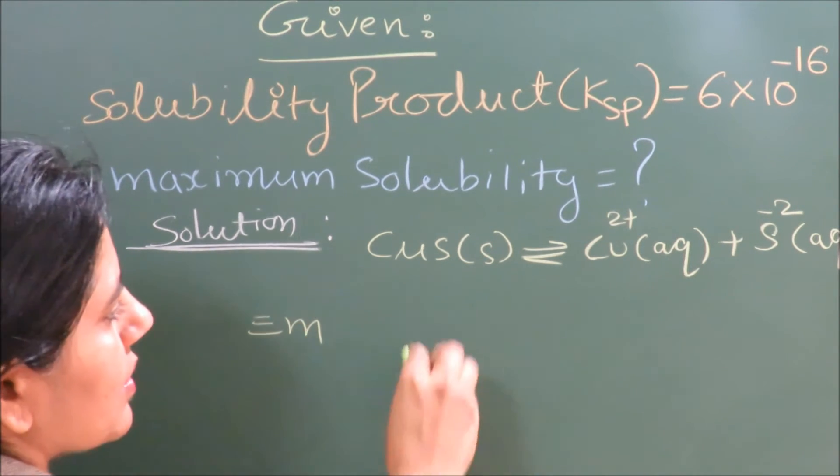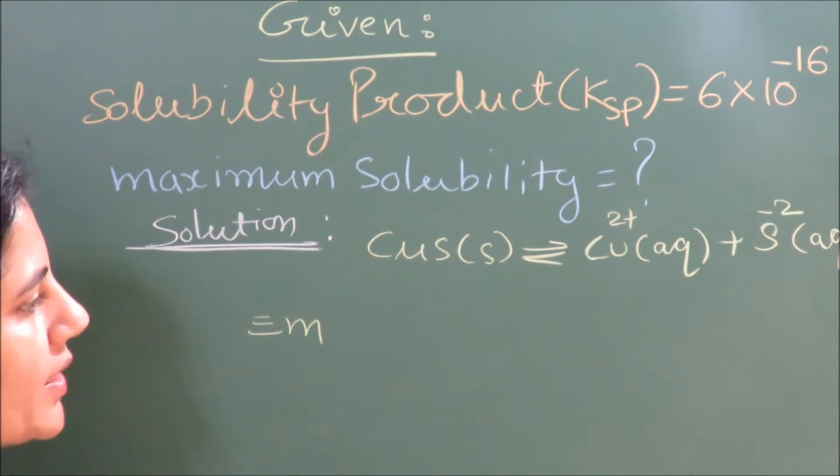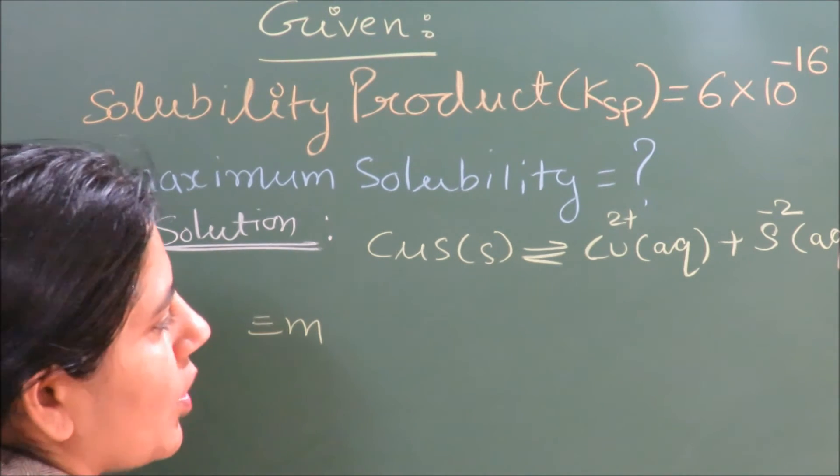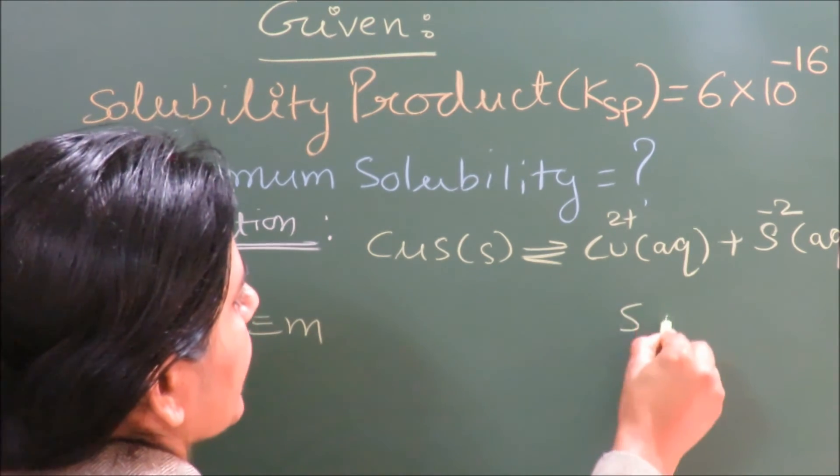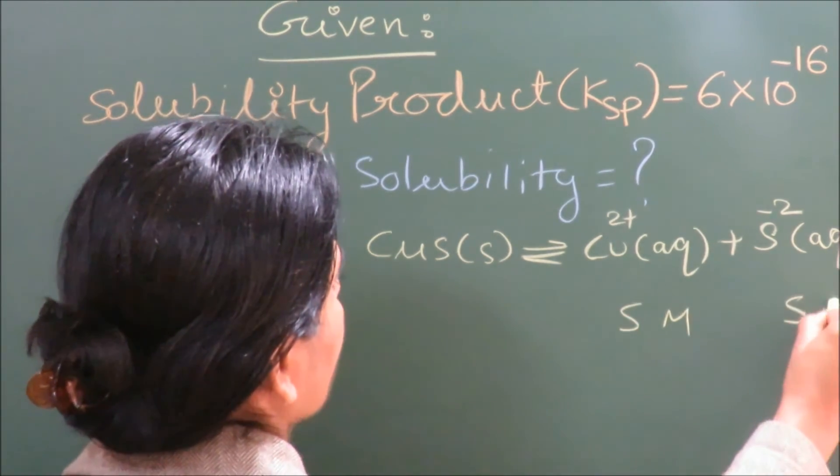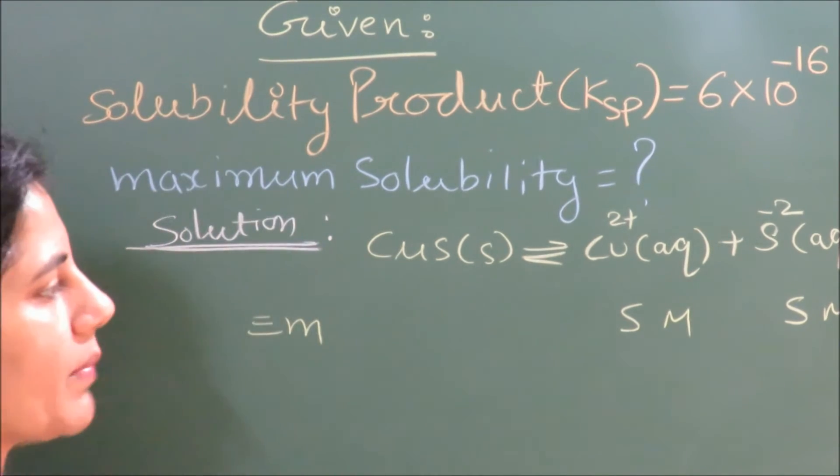S is the solubility of this compound at equilibrium. We are taking it as S molar and S molar, where S represents the maximum solubility of CuS at equilibrium.